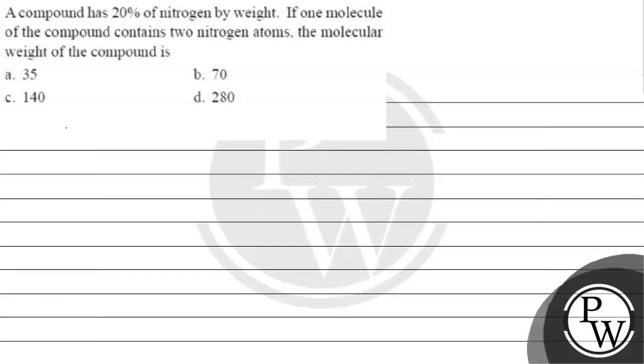Hello, let's read this question. A compound has 20% of nitrogen by weight. If one molecule of the compound contains two nitrogen atoms, the molecular weight of the compound is: option A 35, option B 70, option C 140, option D 280.